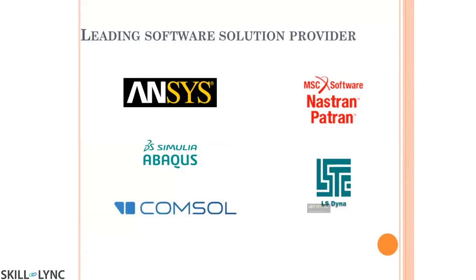The leading FEA solution providers include Ansys, Abaqus, and Comsol, which are among the top leaders in the simulation industry. The choice of software depends on the industry — in automotive, HyperMesh is commonly used as a pre-processor for meshing, with LS-DYNA as the solver. Ansys is widely used in structural and civil environments and is quite user-friendly. Abaqus is also used across structural and thermal physics.